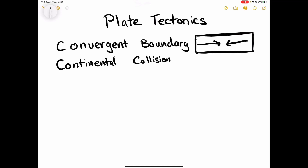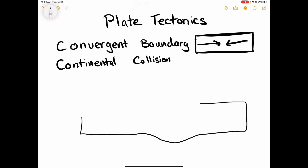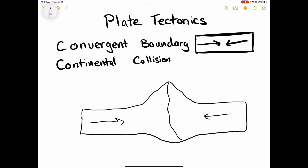This type of convergent boundary is a continental collision where two continents run into another. The best example of this is India and China, where you have this continental plate running into this continental plate.